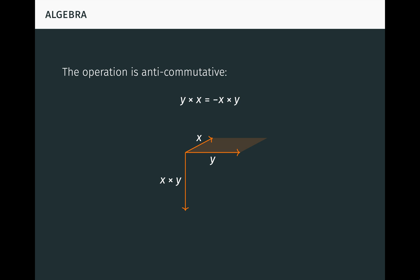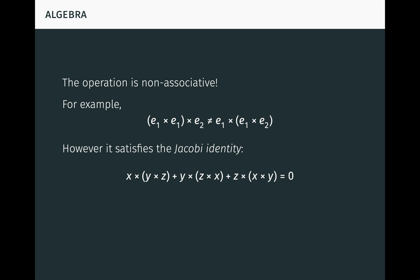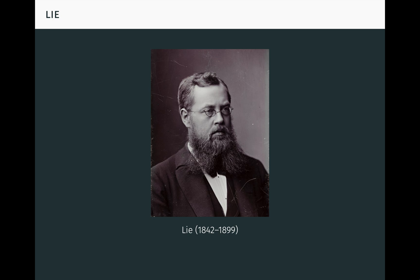Surprisingly, the cross product operation is non-associative, unlike most familiar products. For example, these two products are not equal. The one on the left is zero while the one on the right is non-zero, as you can easily verify. However, it satisfies the Jacobi identity, which is the next best thing. Because of anti-commutativity and the Jacobi identity, R3 is said to form a Lie algebra under the cross product. This is named after the Norwegian mathematician Sophus Lie, who in addition to being an expert on this type of algebra, was also a connoisseur of beard oil. Okay, I guess I was in the mood for some history today after all.